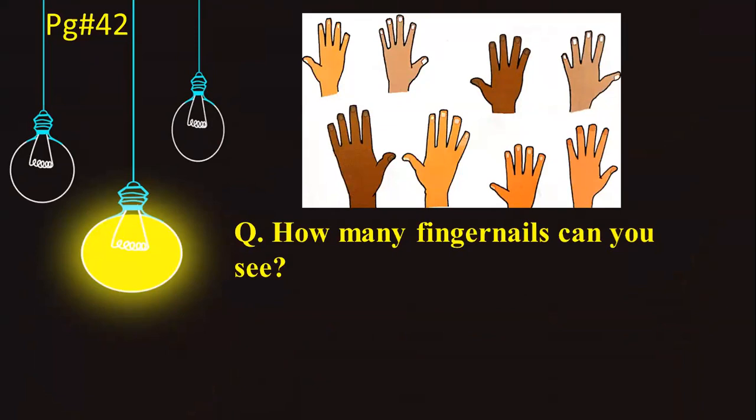Let's get started with the first question given in your maths book, page number 42. What you have to do is: how many fingernails can you see? You have to count in fives and simply tell the answer. It's not difficult — we have done this work before.